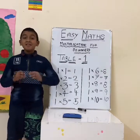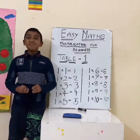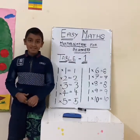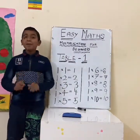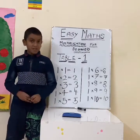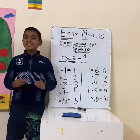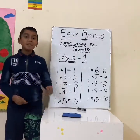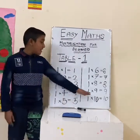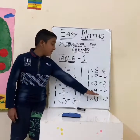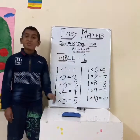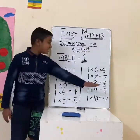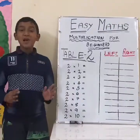Remember this — if you multiply any number with 1, the answer will be the same number. For example, here we are multiplying 9 with 1, so the answer is 9. Now we are going to see the 2 table.